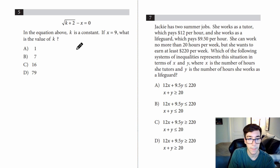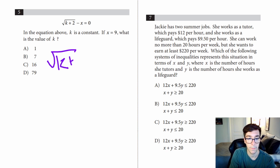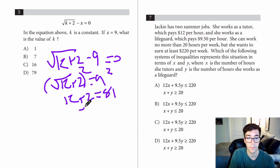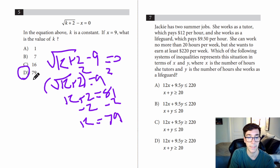Question five: in the equation above K is a constant; if X equals nine, what is the value of K? So it's going to be root of K plus two minus nine equals zero, so root of K plus two equals nine. I'll square both sides: we get K plus two equals 81. Subtract two from both sides and we get K equals 79. So our answer is D.